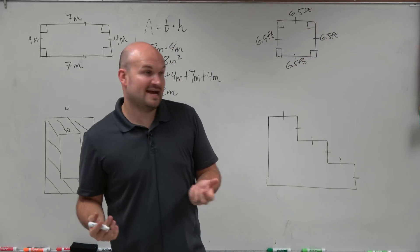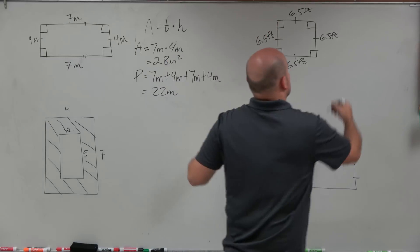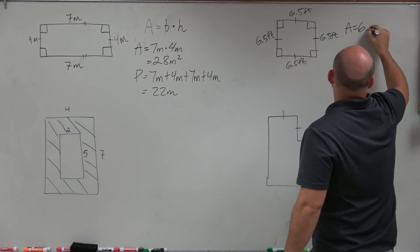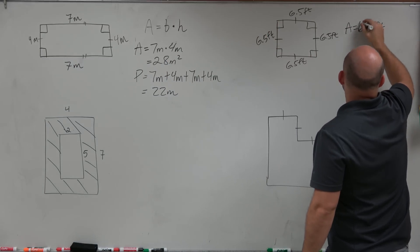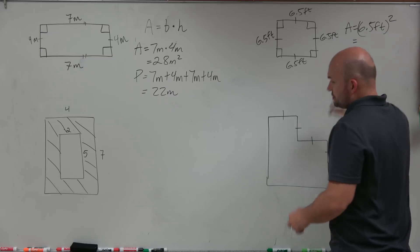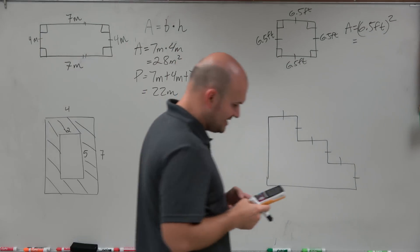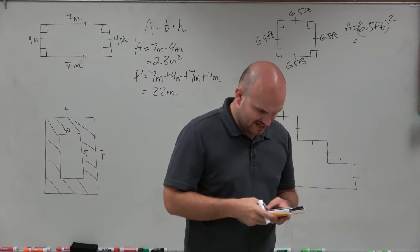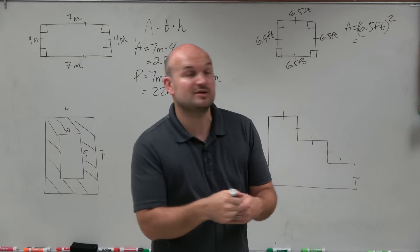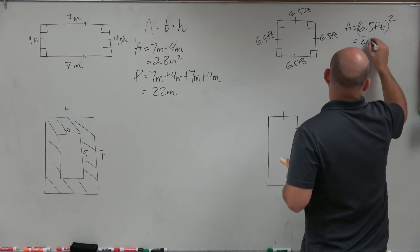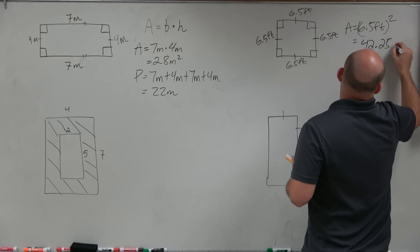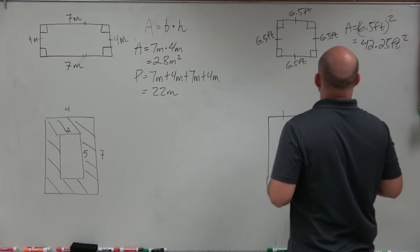Therefore, to find the area, I can say that's my base and that would be my height. So I'd say area equals 6.5 feet. And since it's being multiplied by itself, I can just square it. 6.5 times 6.5, I get 42.25, and that's going to be feet squared.